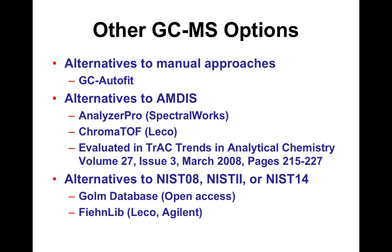There are also automatic approaches like GC AutoFit, which we'll try today. Other manual approaches include Analyzer Pro, Chromatof, and AMDIS — these were compared about 10 years ago and not much has changed. There are also alternatives to NIST: NIST-08, NIST-11, NIST-14, and NIST-17 or 18, as well as the GOLM database and Oliver Fiehn's Fiehn Library.